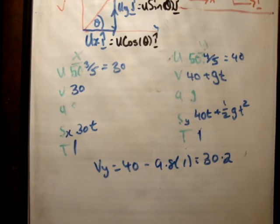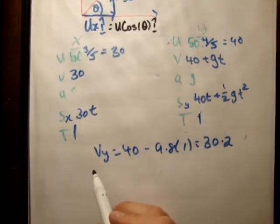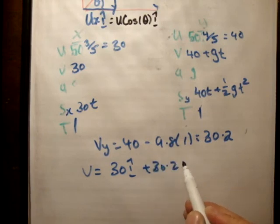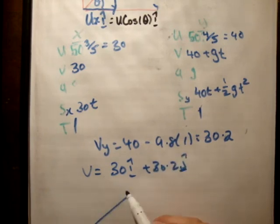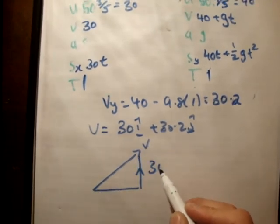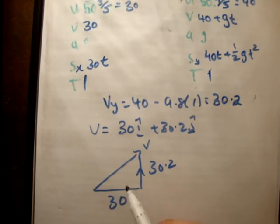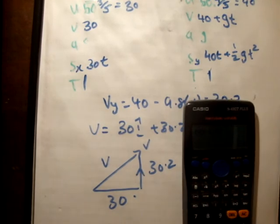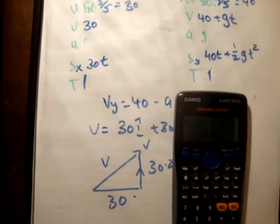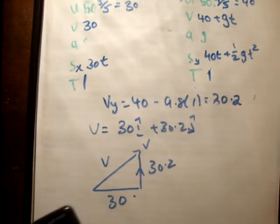We have to find the magnitude. So what we know is that v is equal to 30i hat plus 30.2j hat. So if this is v, then what we have are the resultant vectors where this is 30.2 and this is 30. So in order to get v, we need to use Pythagoras. So we get v is equal to square root of 30.2 squared plus 30 squared. And root that, get an answer of 42.56.